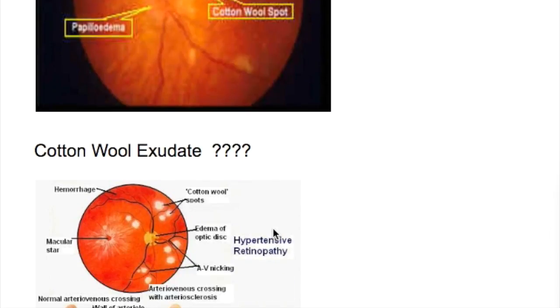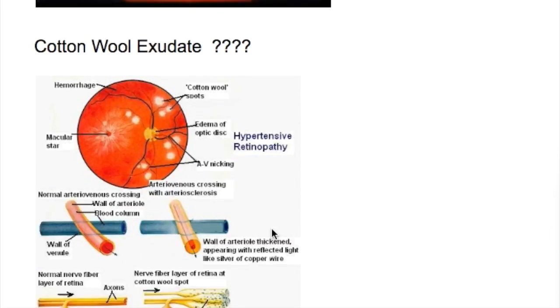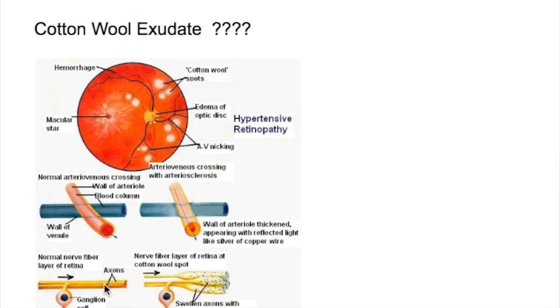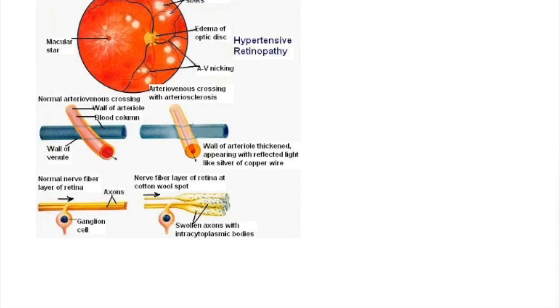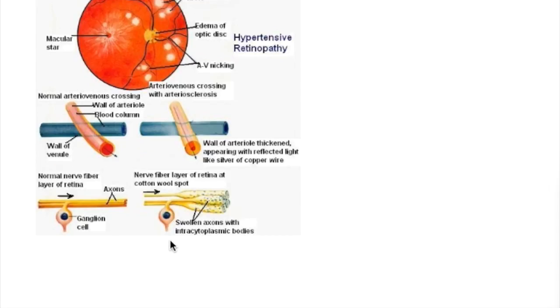What is a cotton wool exudate? This is the normal nerve fiber, and this is a swollen axon with intracytoplasmic bodies. It is a focal infarct of the nerve fiber layer, known as cotton wool spots.